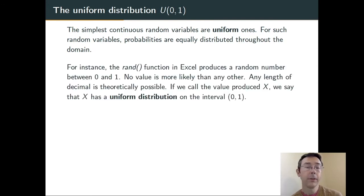One example that you might have seen is in Excel, the rand function. If you type in rand, Excel is going to give you a random number between 0 and 1 with as many decimal places of accuracy as you specify. No values are any more likely than any other values. So, if we call the outcome X, we have what we call a uniformly distributed random variable on the interval (0,1).